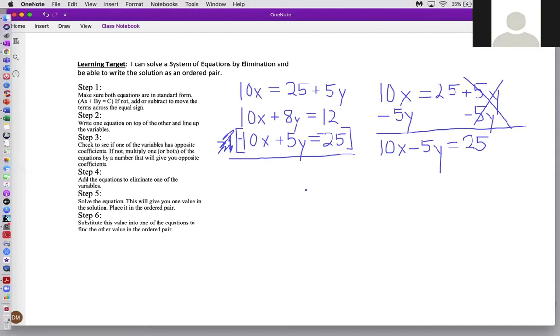If you said step four, add the equations to eliminate the variables, you're absolutely right, to eliminate one of the variables. In this case, it's the x terms that cancel out or eliminate, hence the name elimination. 8y plus 5y equals 13y. 12 minus 25 is equal to a negative 13.